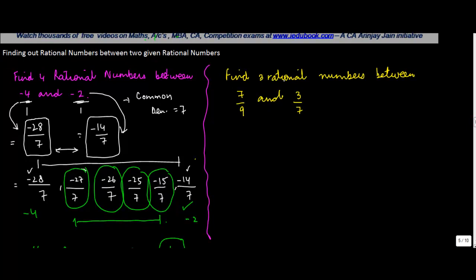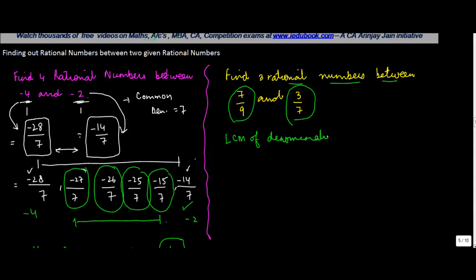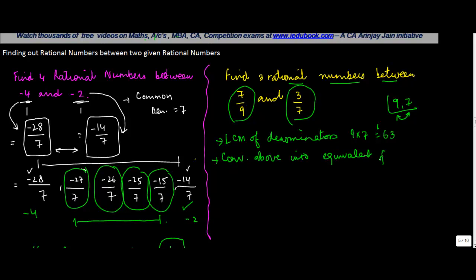Now let's see how to find rational numbers between other fractions. In these cases, the best way is to find the LCM of the denominators. For seven upon nine and three upon seven, there is nothing common dividing both nine and seven, so their LCM is nine times seven, which is 63. Then you convert both fractions into equivalent fractions with a denominator of 63.